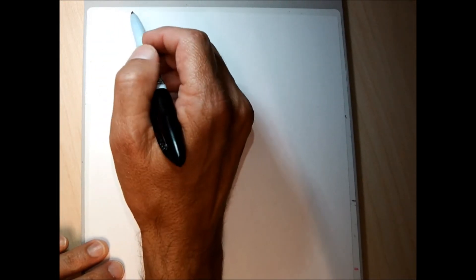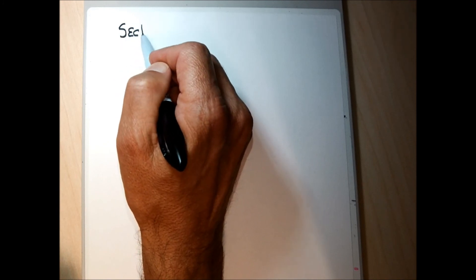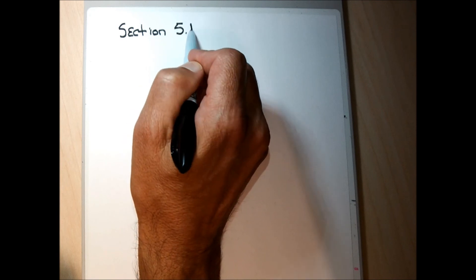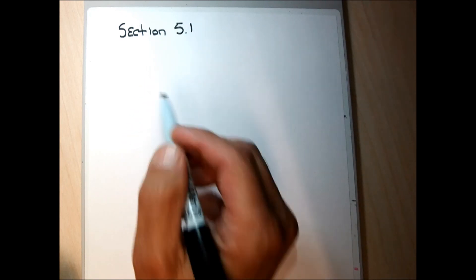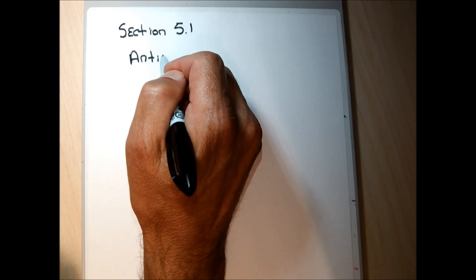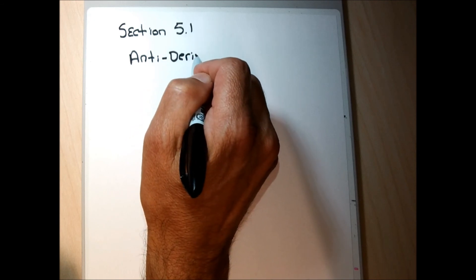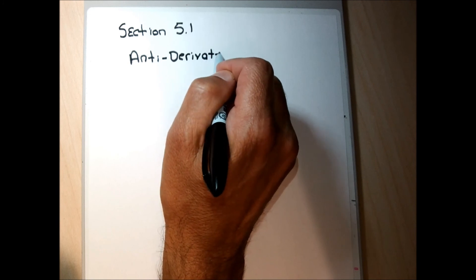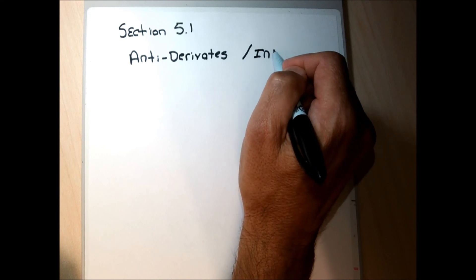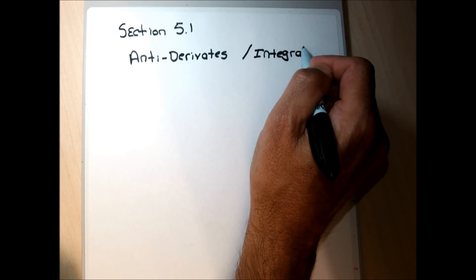We're heading into the last chapter for the semester and we're going to start with section 5.1. The title of the chapter is antiderivatives — that's the old school name. The new school name is called integrals, and essentially we're going to be doing derivatives in reverse in this chapter.